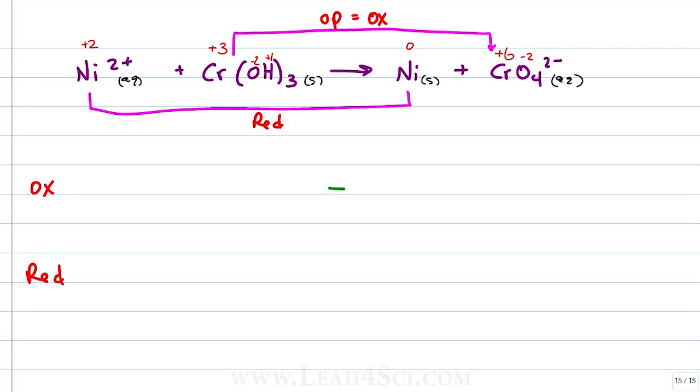I know what got oxidized, I know what got reduced, so let's put our arrows down the middle and write out our half reactions. For the oxidation half, we have Cr(OH)3 goes to CrO4 2-.